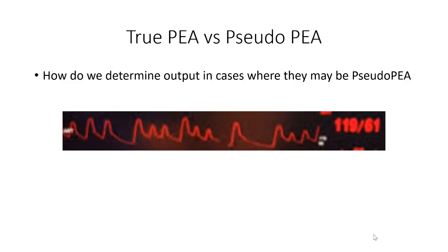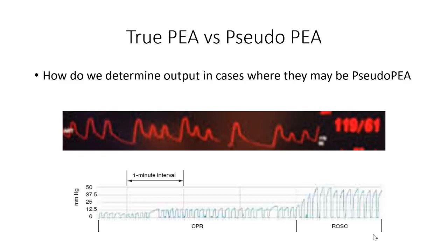Another way to assess for output is the use of end-tidal CO2. If a patient is pulseless and having no output, the end-tidal CO2 waveform will be flat and there will be no end-tidal readings because there is no gas exchange and no circulation of blood. Now, if the patient is a CO2 retainer, there may be some false readings, so this is not a perfect monitoring system. But if the patient does have output, the end-tidal CO2 will have a waveform and corresponding CO2 levels.